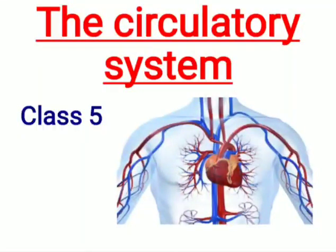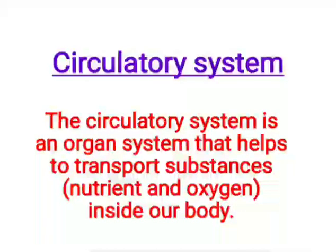Hello students, today we are going to study the human circulatory system following the fifth grade ICC curriculum. As we know, our body is made up of many organ systems. Cells together form tissue, tissue together forms organs, and organs together form organ systems which work together so that our body can function normally. We have studied various organ systems in previous classes; let us study more about the circulatory system and its role in our body.